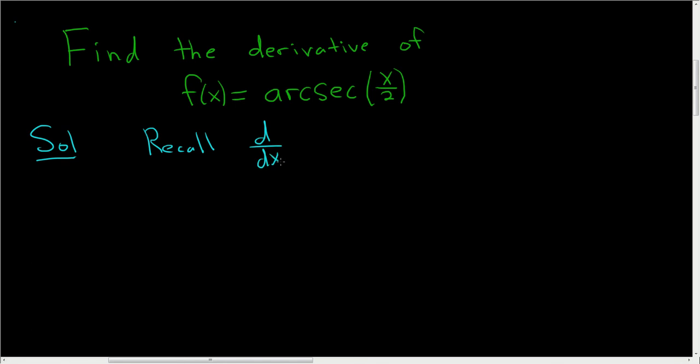If you take the derivative of arcsec(x), this is 1 over the absolute value of x times the square root of x squared minus 1. So that's the derivative of arcsec.